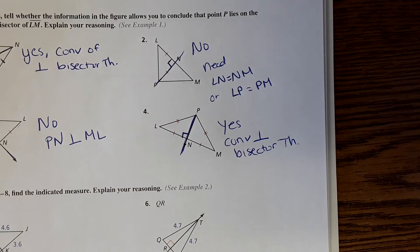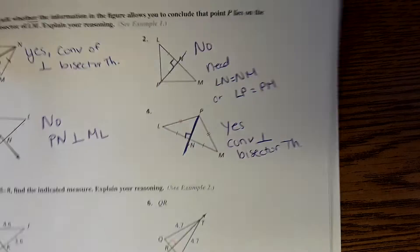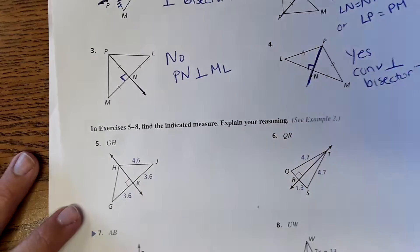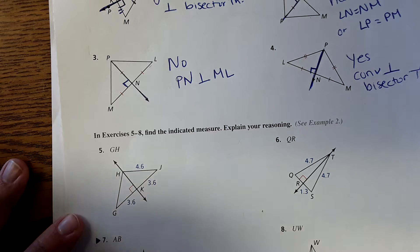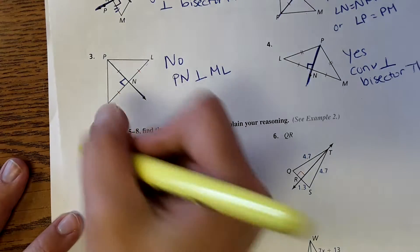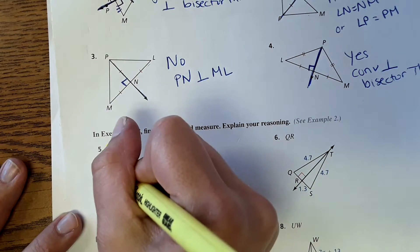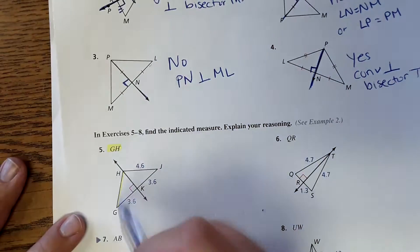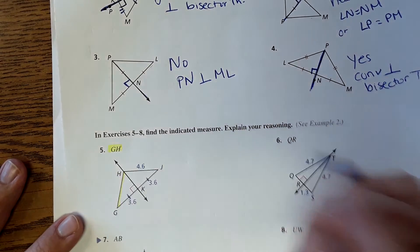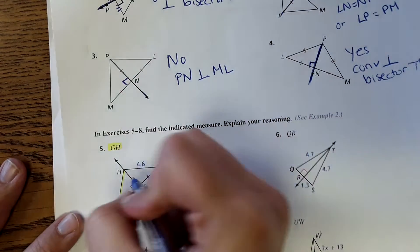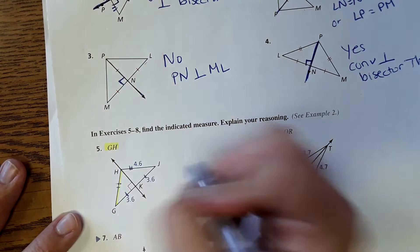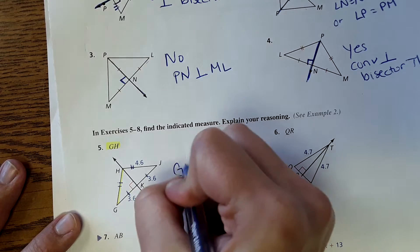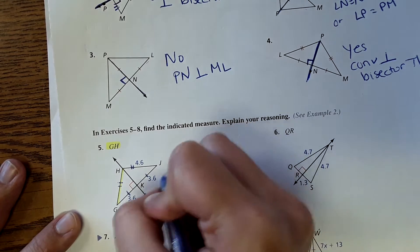I'm going to zoom out because it keeps getting out of the frame. Now we're going to bring in the math part. Here it's asking for segment GH — that would be this segment right here. It shows perpendicular, it shows that this is equal to this. So therefore this segment is the same length as this one. So GH equals 4.6.